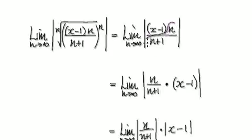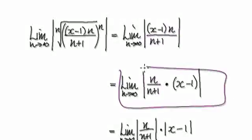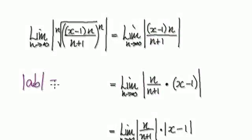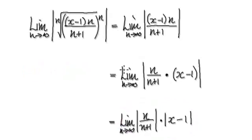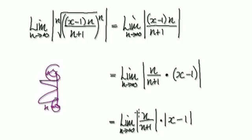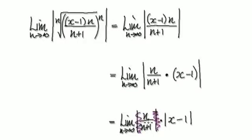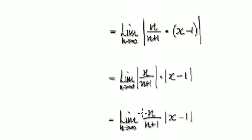Now group all the n's together. Remember, the absolute value of a times b is the same as the absolute value of a times the absolute value of b. Since n goes from zero to infinity, n is always positive, so when you take the absolute value of n, the absolute is redundant — you can ignore it.